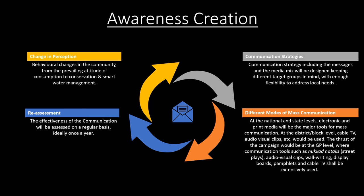Atal Jal cannot be made successful on the ground if it fails to generate mass change in behavior of water users, whether it is farmers using water for agriculture or domestic water consumption needs in the villages. This makes information, education and communication crucial in the program. Through mass communication such as television channels, cable TV or through local campaigns such as street plays, wall paintings, short videos, and display boards, the program aims to sensitize communities, without whom demand management and sustainable groundwater use cannot be achieved.